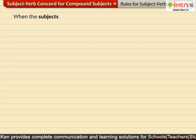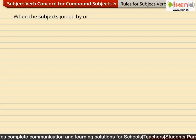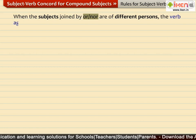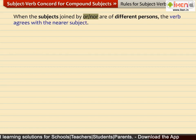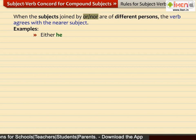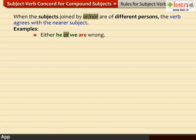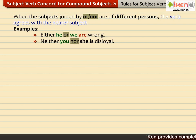When the subjects joined by OR or NOR are of different persons, the verb agrees with the nearer subject. For example: 'Either he or we are wrong.' Since the subject WE is close to the verb, it takes the plural verb ARE. Look at the next sentence: 'Neither you nor she is disloyal.' Since the subject SHE is close to the verb, it takes the singular verb IS.